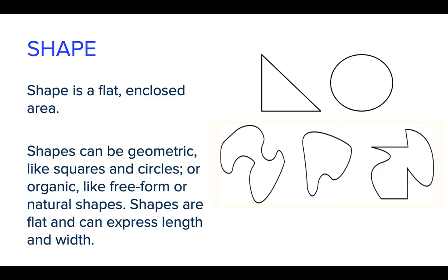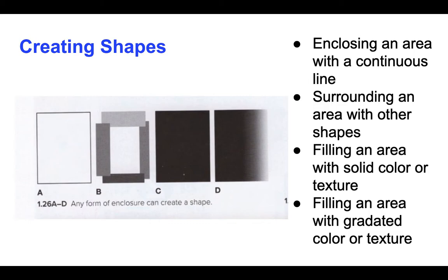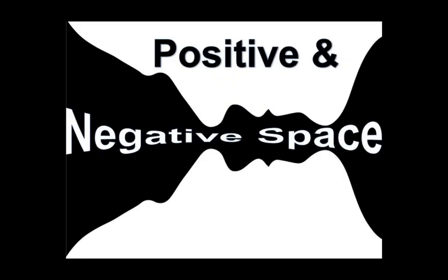A shape is a flat enclosed area. Beyond this simple definition, there are many different types of shapes, from geometric to organic, curvilinear to free-form. We will explore different ways you can create shapes, whether you are enclosing an area with an outer boundary or choosing another method. We will also examine the difference between positive and negative shapes. The positive shapes appear to be an object or a form, whereas the negative shapes seem to be the empty space surrounding these shapes.